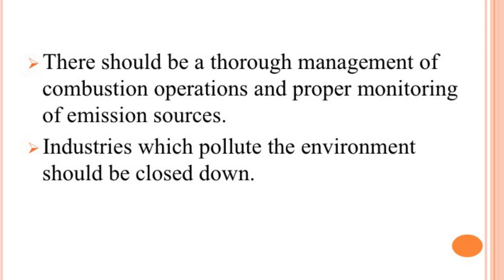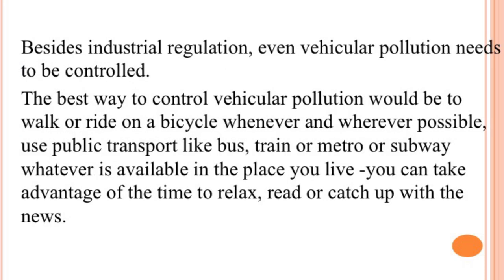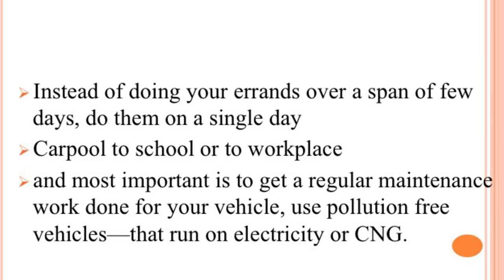Industries which pollute the environment should immediately be closed down. Besides industrial regulation, vehicular pollution also needs to be controlled. The best way to control vehicular pollution is to walk or ride a bicycle wherever possible, use public transport like bus, train, metro or subway, carpool to school or workplace, and get regular maintenance done for your vehicle. Use pollution-free vehicles that run on electricity or CNG.